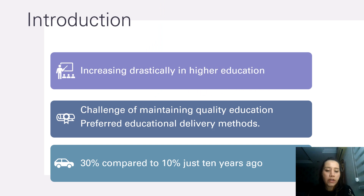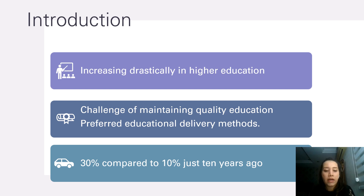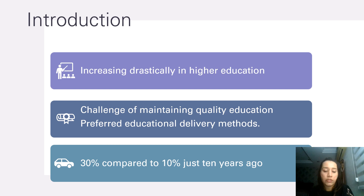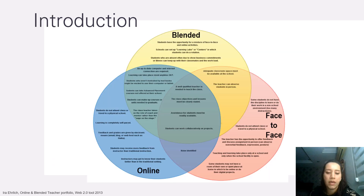Starting off with introduction. Online learning and blended learning are increasing drastically in higher education. This leads to challenges of maintaining quality education and students' preferences on the type of educational delivery methods. As compared to today, 30% of students are now registered in online courses compared to just 10% ten years ago. Now looking further into the comparison and similarities of the three delivery learning methods.